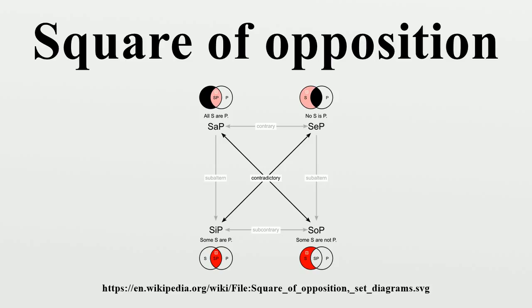In tabular form, Aristotle states that there are certain logical relationships between these four kinds of proposition. He says that to every affirmation there corresponds exactly one negation, and that every affirmation and its negation are opposed such that always one of them must be true and the other false. A pair of affirmative and negative statements he calls a contradiction. Examples of contradictories are: 'every man is white' and 'not every man is white'; 'no man is white' and 'some man is white'.